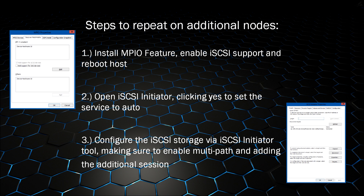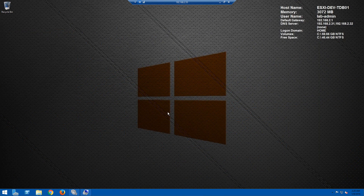Now that the first host is configured, we repeat these steps on the additional host. Step one: install the MPIO feature, enable iSCSI support, and reboot — this is critical. If you skip it, you'll see duplicate volumes; where I added three volumes, you'd see six. Step two: open the iSCSI Initiator and click Yes to set the service to auto-start. Step three: configure the iSCSI storage via the iSCSI Initiator tool, making sure to enable Multi-Path and add that second session to enable multi-path IO.